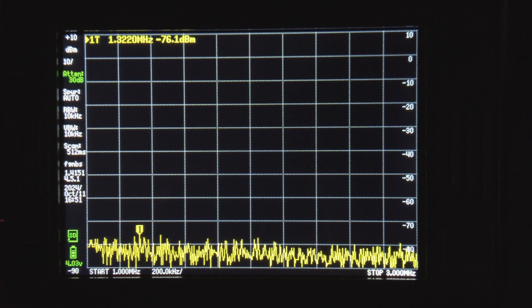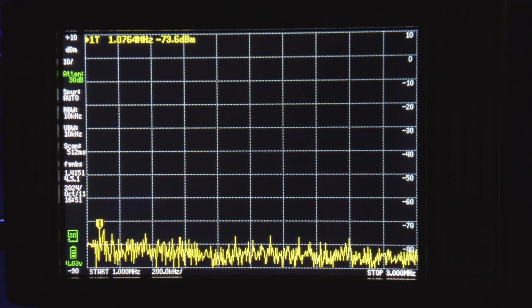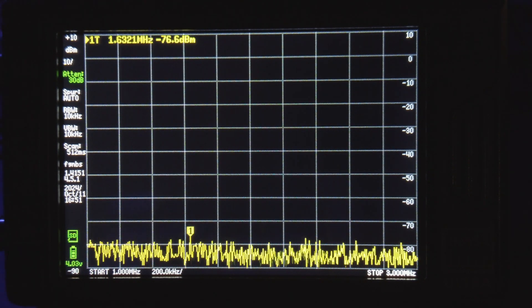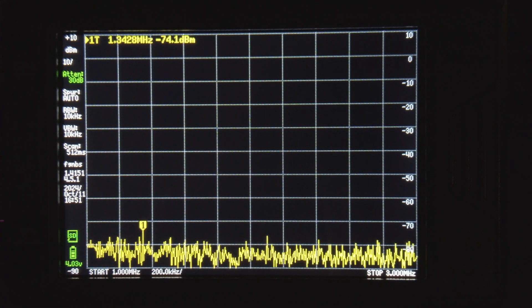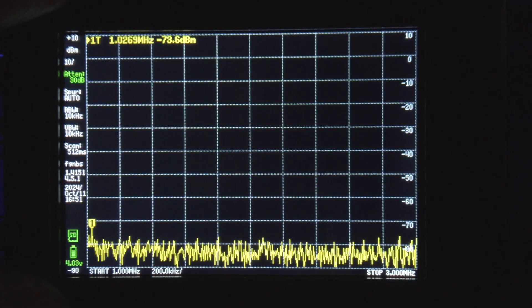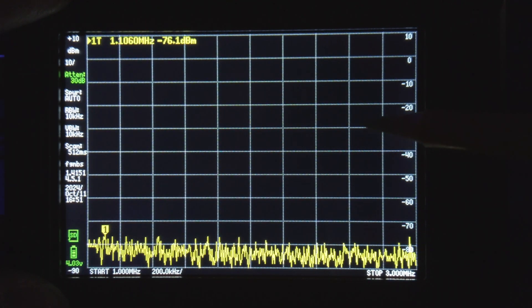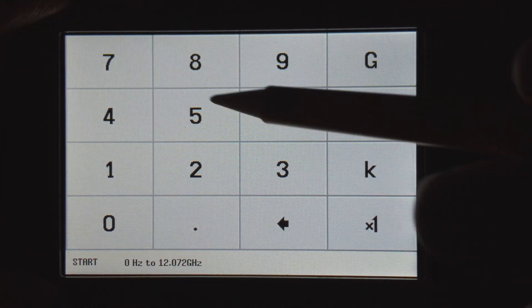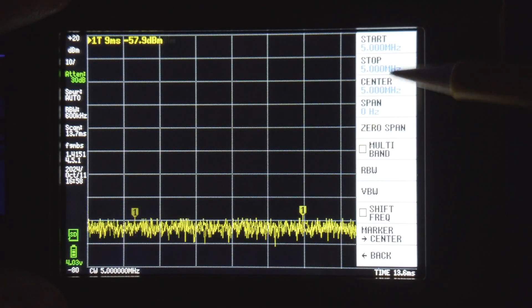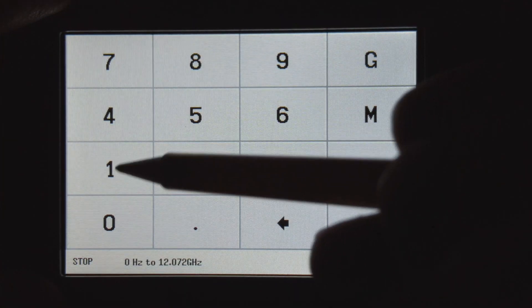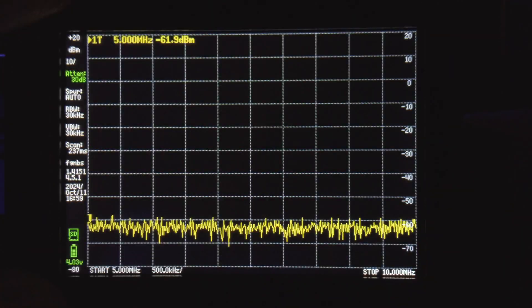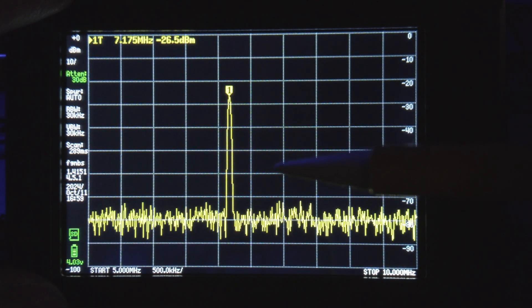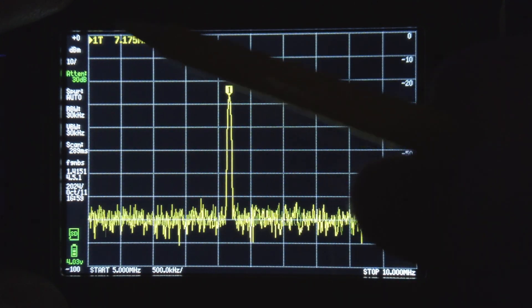Now there's one important detail that I should mention. A spectrum analyzer is a relatively sensitive piece of equipment, so I'm going to put an attenuator between the output of the signal generator and the input of the spectrum analyzer to cut down the signal strength. So let's set our span from 5 MHz to 10 MHz. And as we expect to see, there's a spike at 7.175 MHz.